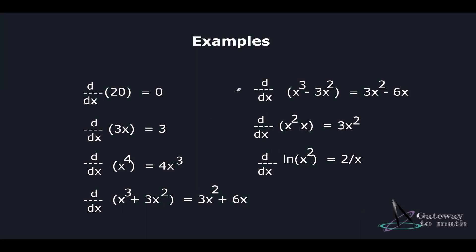Let us take some examples. Differentiating 20: it's a constant, so the result is 0. Next, differentiating 3x: 3 is a coefficient, so we take the constant out and differentiate x with respect to x, which is 1. So 3 times 1 equals 3. Now differentiating x^4: by the power rule, 4 becomes the coefficient and we subtract 1 from the power, giving 4x^3.